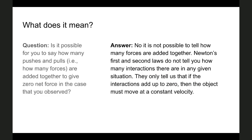Though the net force was equal to zero, it is not possible to tell how many pushes or pulls there are on the ball. We know that there are other forces acting on the ball, such as friction or gravity. However, Newton's second law does not tell you how many interactions there are in any given situation. It only tells us that if the interactions all add up to zero, then the object must move at constant velocity.